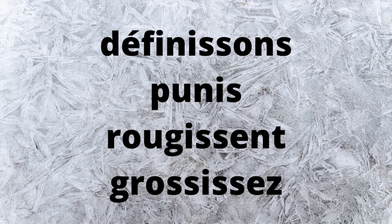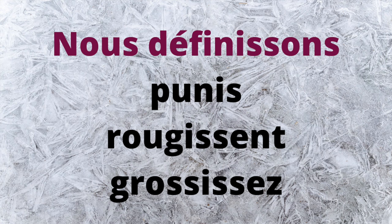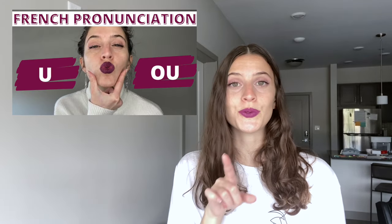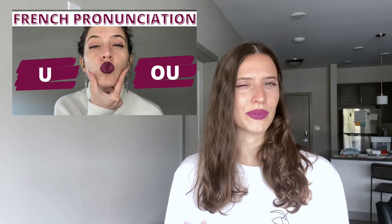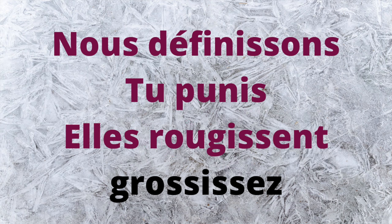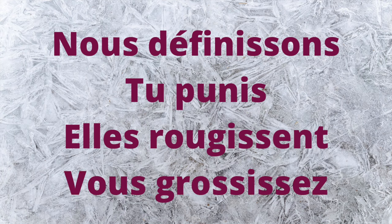For the first verb, définissons — there's only one option: nous définissons, meaning 'we define' or 'we are defining.' With punis, this can be either je punis or tu punis, meaning 'I or you punish.' If you're having trouble with the u sound, check out my video on the differences between u and ou. The third verb, rougissent — il/elles rougissent, meaning 'they are blushing.' And the fourth verb, grossissez, goes only with vous — vous grossissez, meaning 'you are getting bigger.'